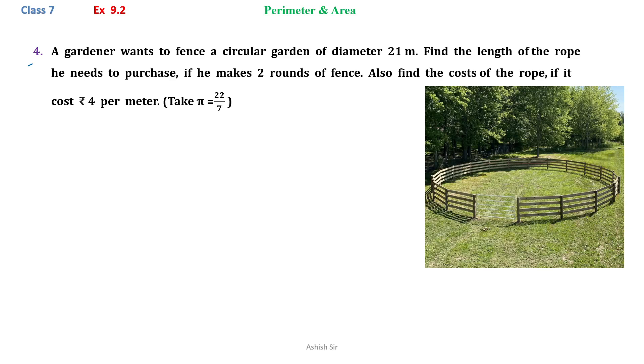Exercise 9.2 Q4. A gardener wants to fence a circular garden of diameter 21 meter. Find the length of the rope he needs to purchase if he makes two rounds to fence. Also find the cost of the rope if the cost is Rs. 4 per meter.